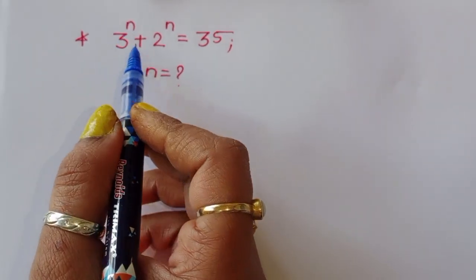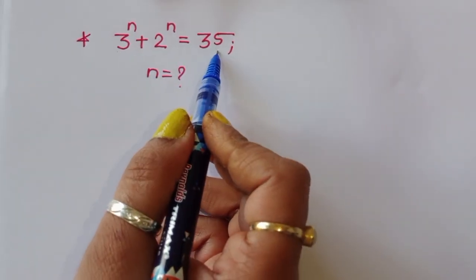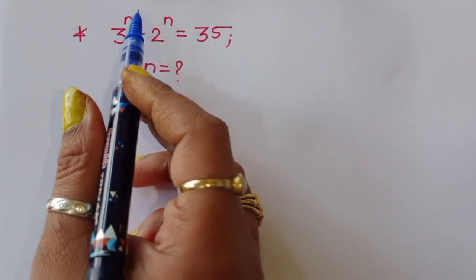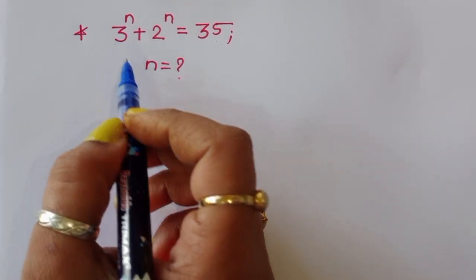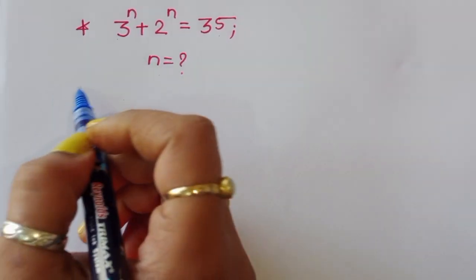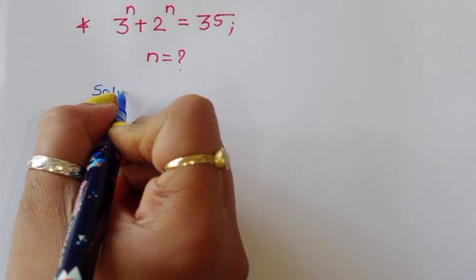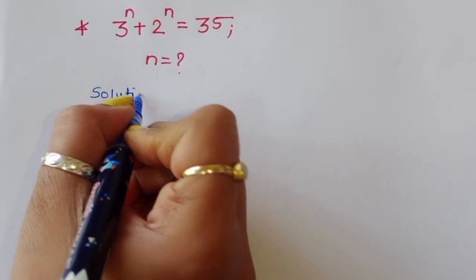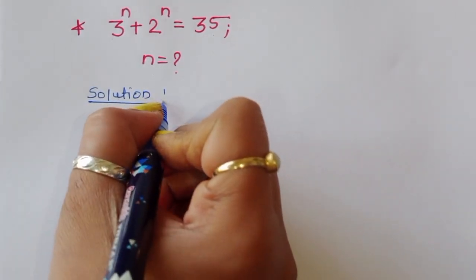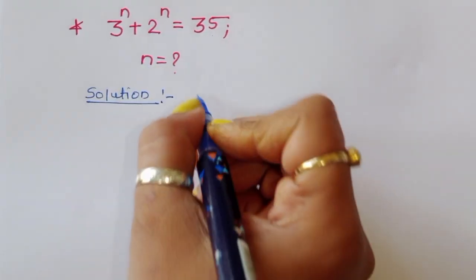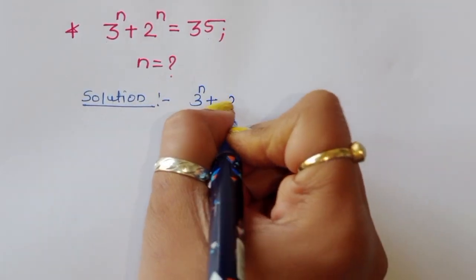We are given 3^n + 2^n = 35, and we have to find the value of n. Let's see the solution.